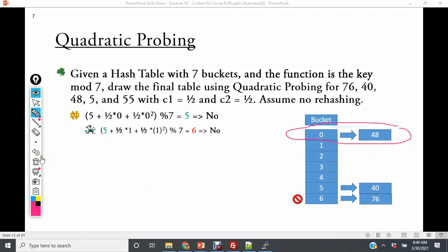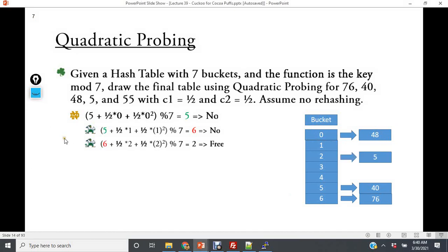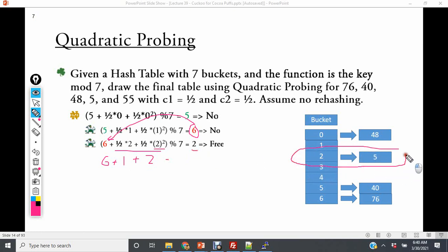The benefit here is now we go to 2 in the iteration. We go to 6. And then we have ½ × 2, which is 1, plus ½ × 2², which is 4, which is 2. So this becomes 6 + 1 + 2. So this becomes 9 mod 7, which is 2. And this allows us to be able to distribute when we have another collision.